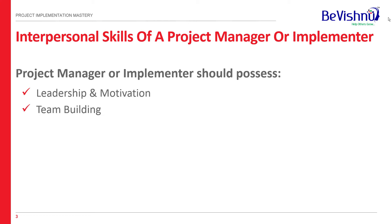The next skill is team building. When you get a project, it's important to learn how to build a team. If the team is not there, identify what skills they need to execute the project successfully. You create a charter for competence development, teach them what they need to learn, get them trained internally or externally. One aspect is competency, skill, and knowledge; the other is connection within the team — there should be no conflicts, and if any arise, they should be sorted out and communicated clearly.